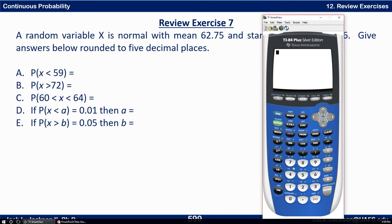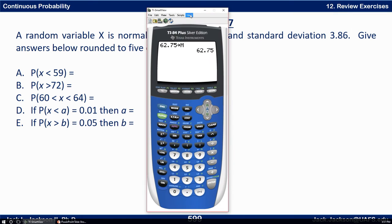Now we're back. What I like to do is take this 62.75 and store it as M right off the bat. Then I'll do the same thing for the standard deviation 3.86, storing it as S.